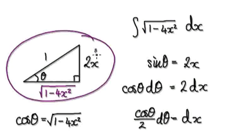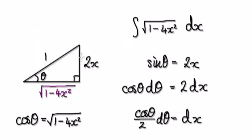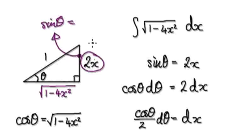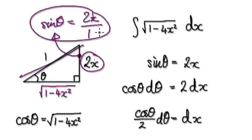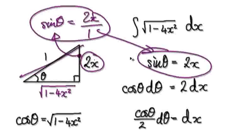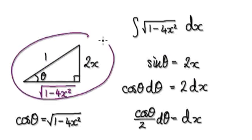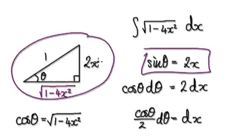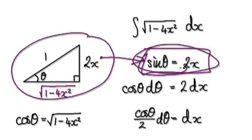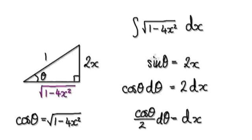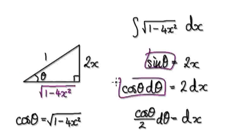Once you've got your right angle triangle, you can then use the fact that sine θ equals opposite over hypotenuse. So sine θ equals 2x. Once you've created your right angle triangle and established that, differentiate both sides.